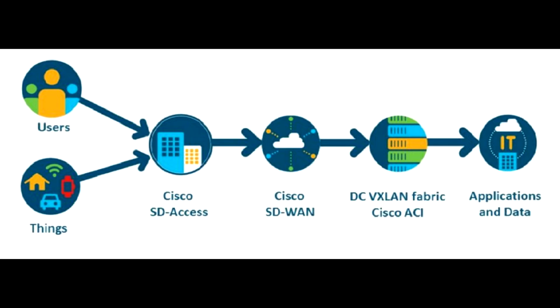In traditional networks, managing network access typically involves VLANs, access control lists (ACLs), and complex configurations. These often result in a web of tangled rules and manual configurations.